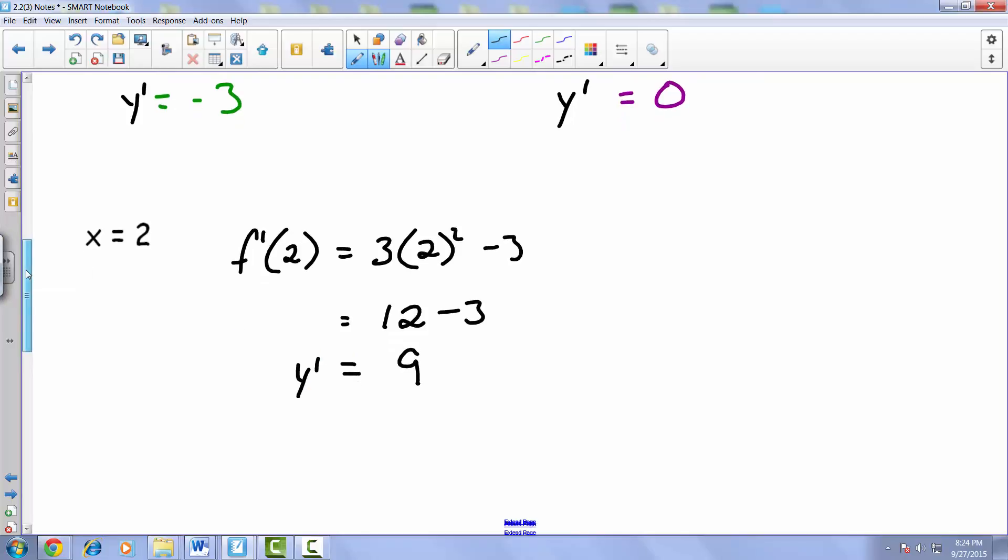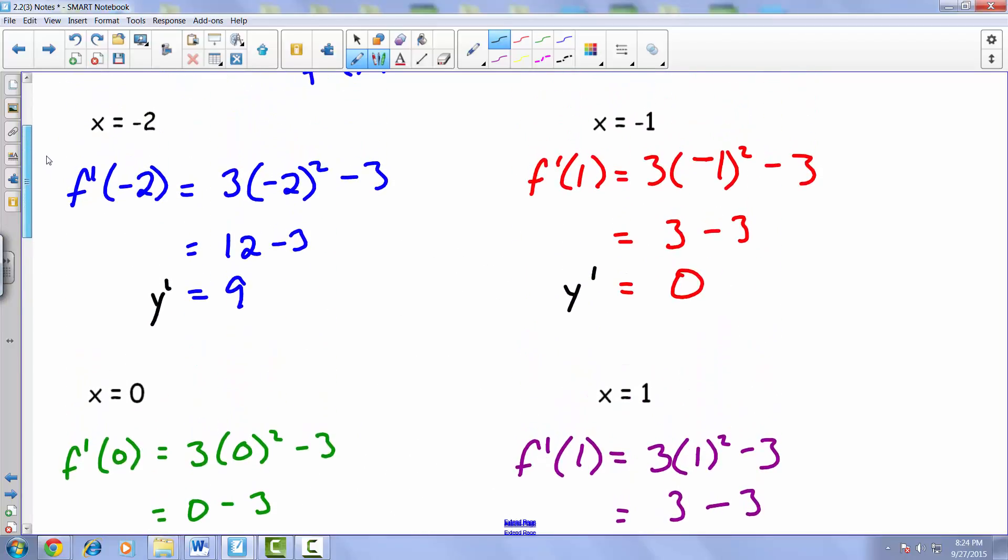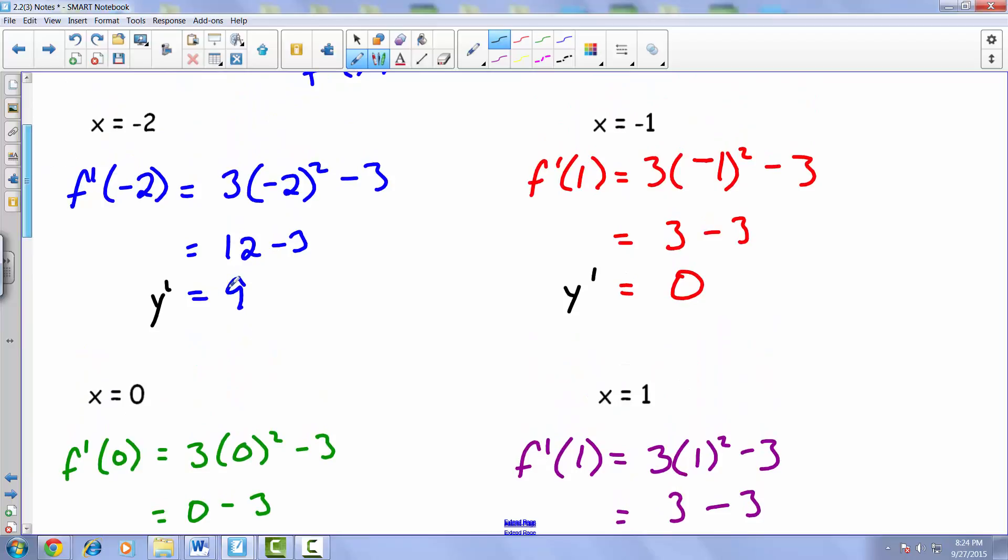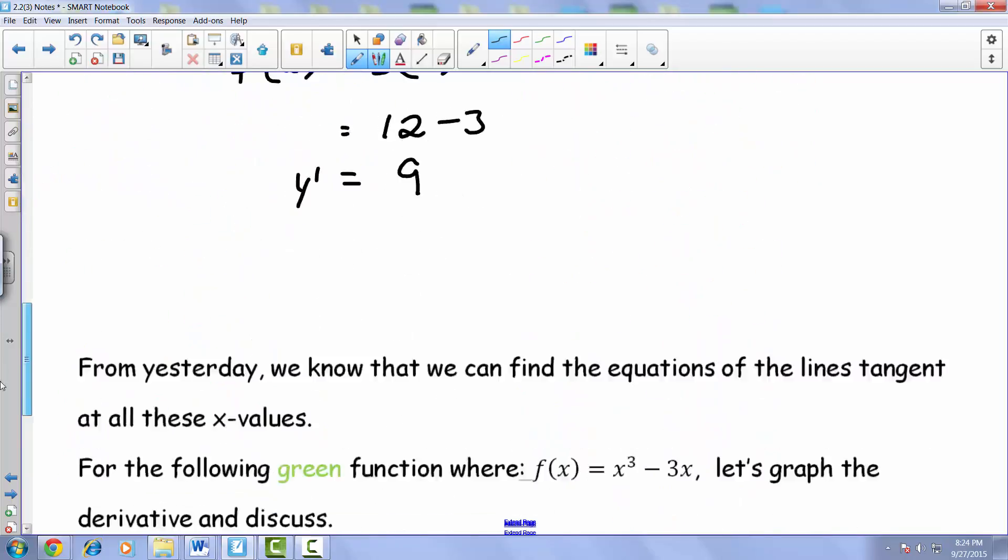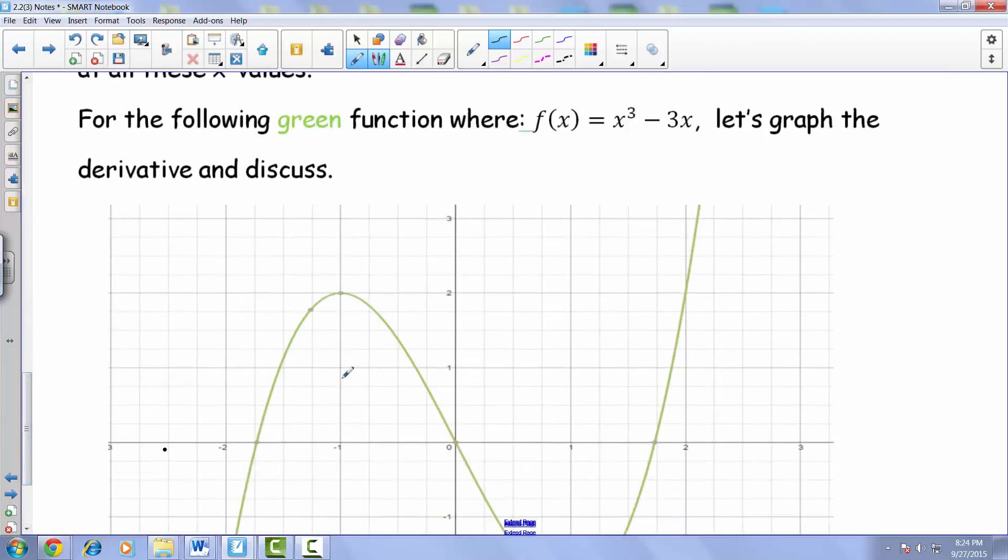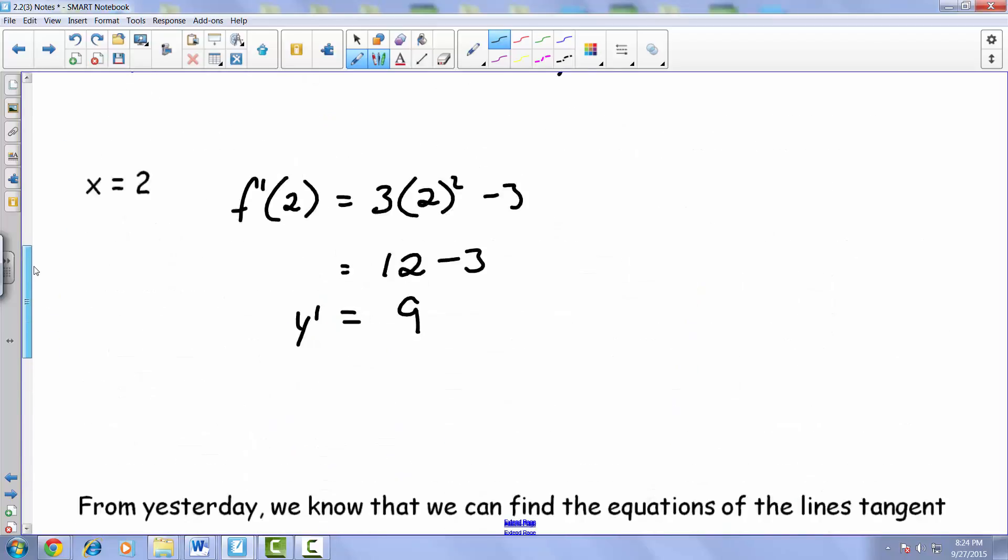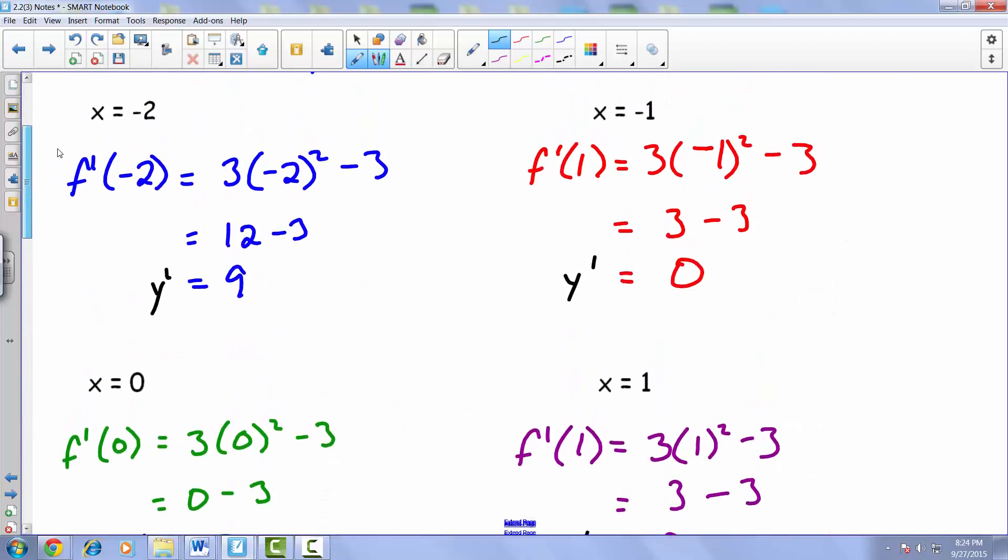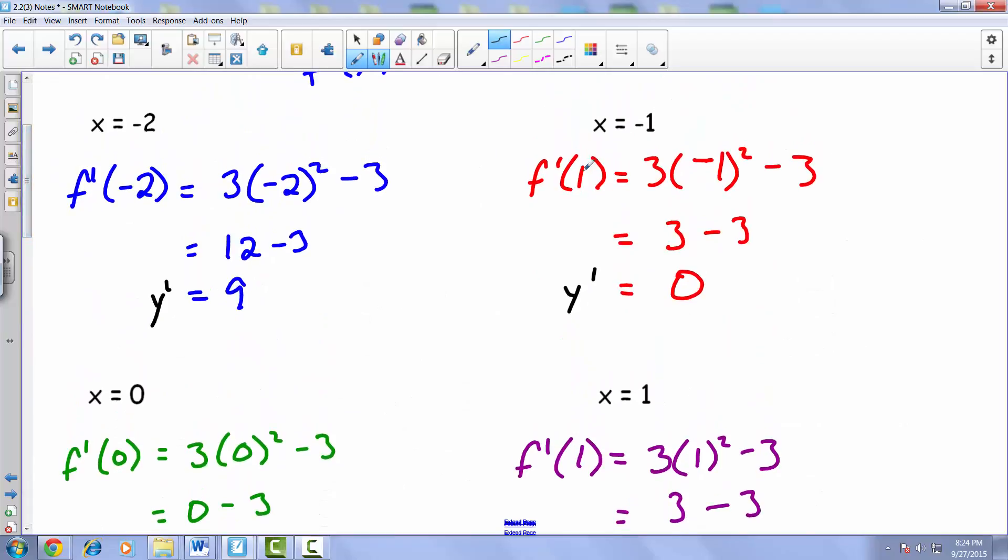So on our graph, we have the point negative 2, 9, which unfortunately on the graph, we can't actually go ahead and plot because it only goes up to 3. But you can imagine it's somewhere up here. Then at negative 1, we ended up with that y prime coming out to be 0.